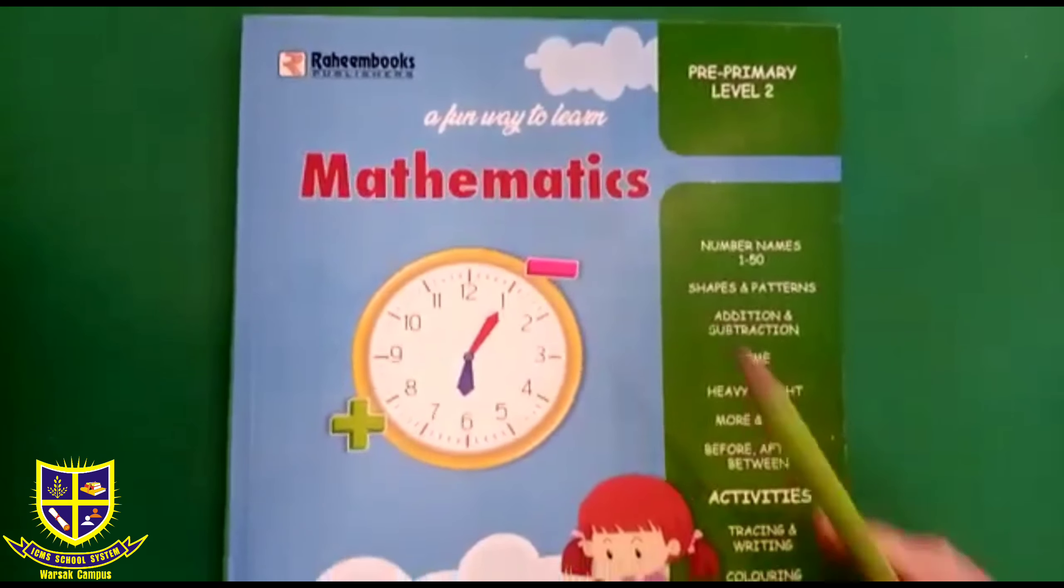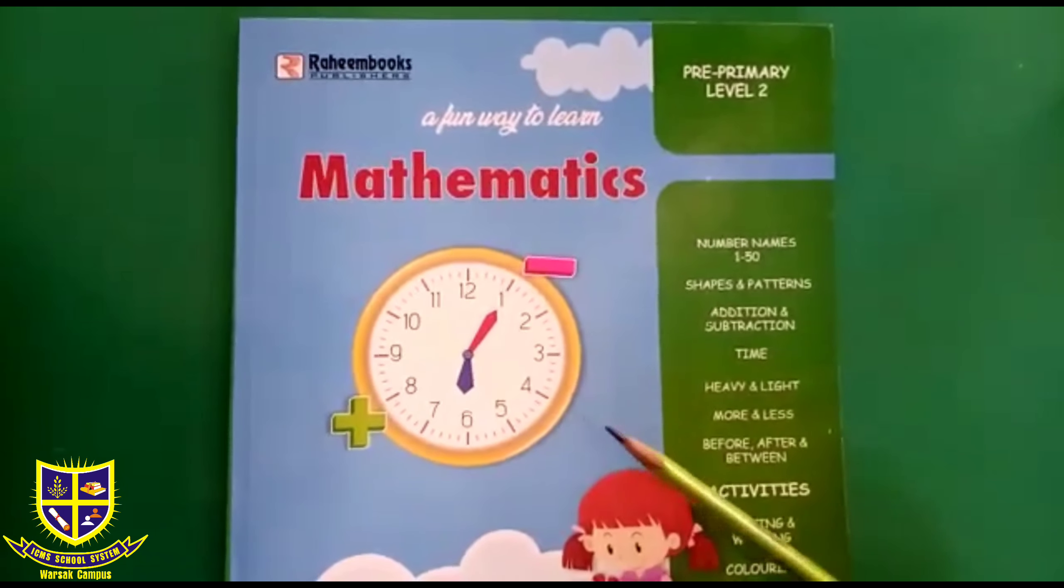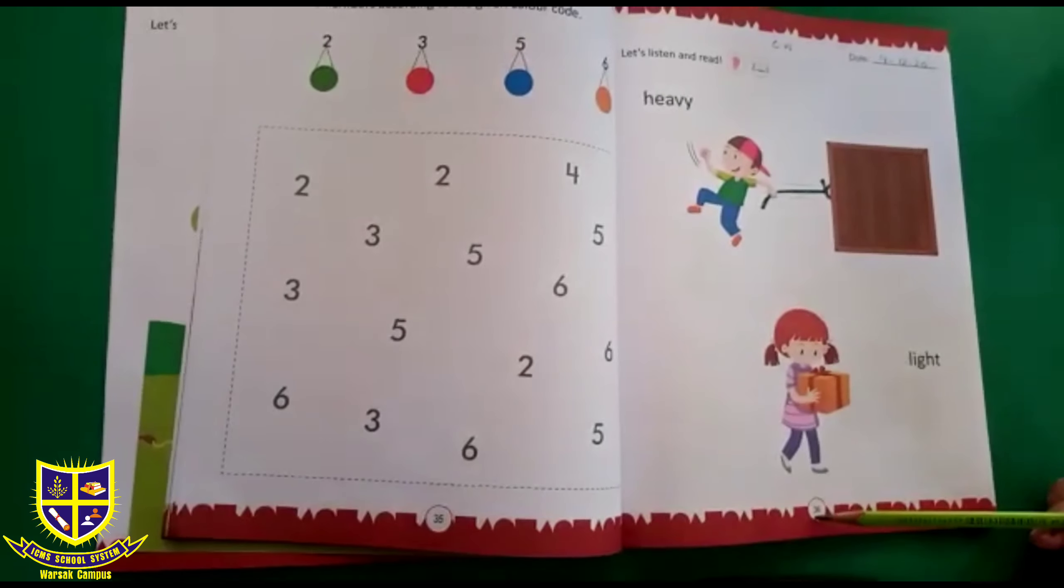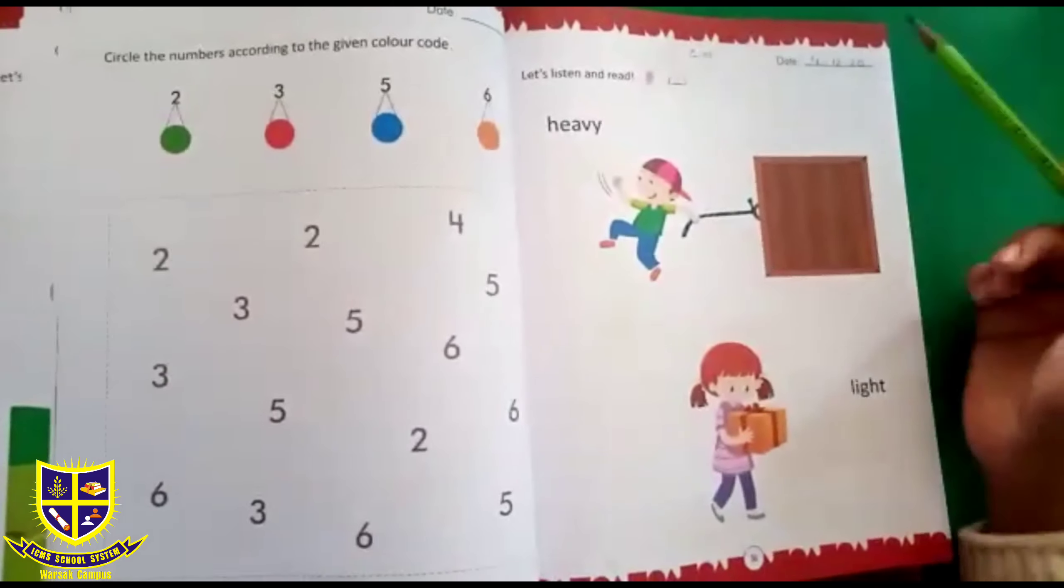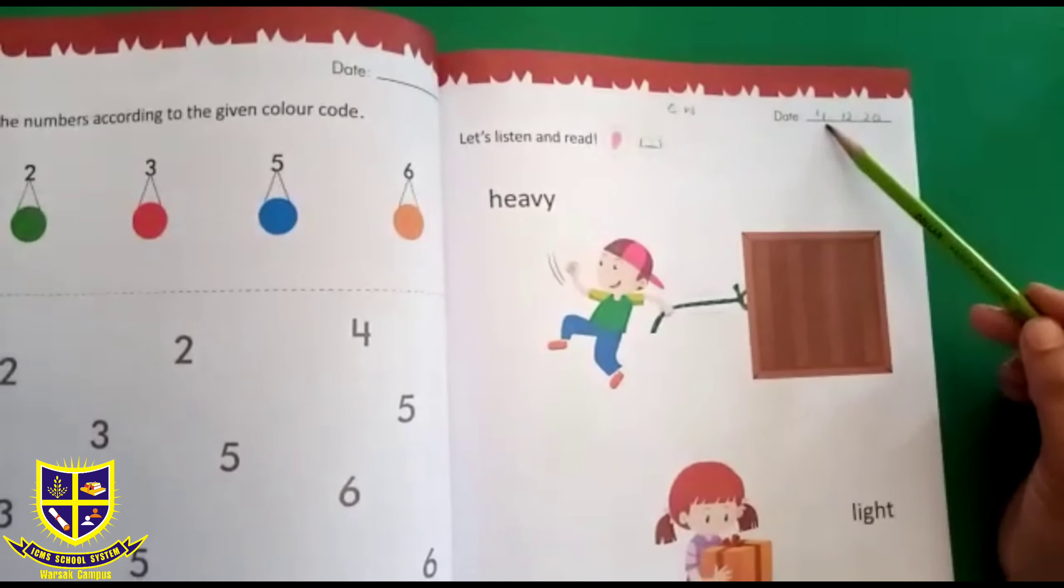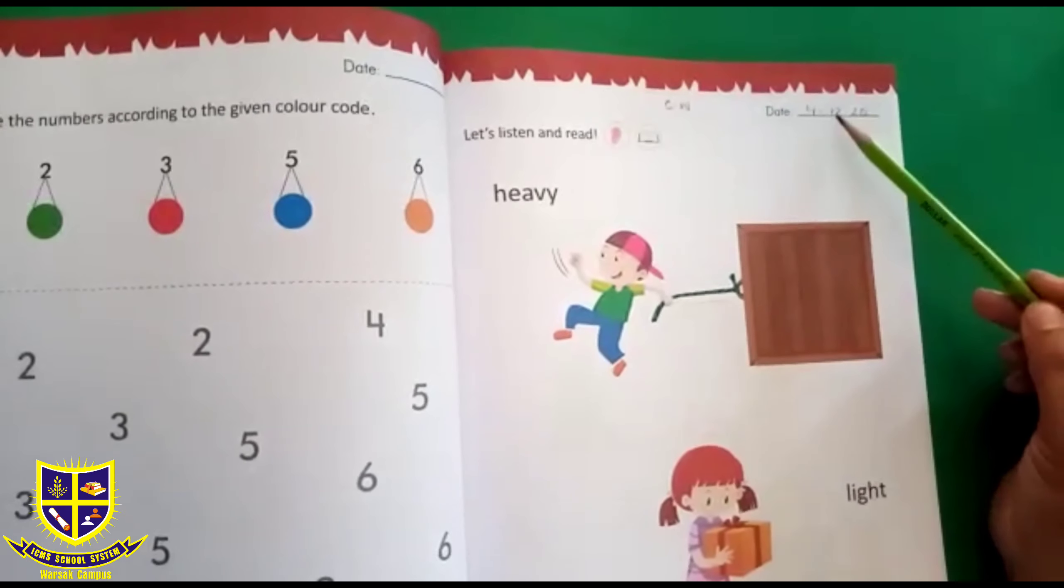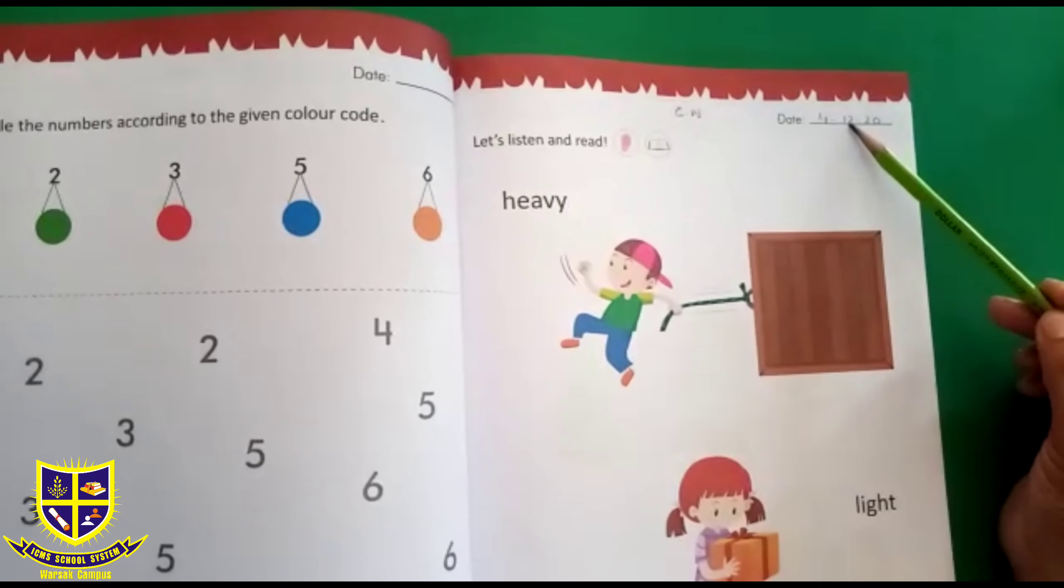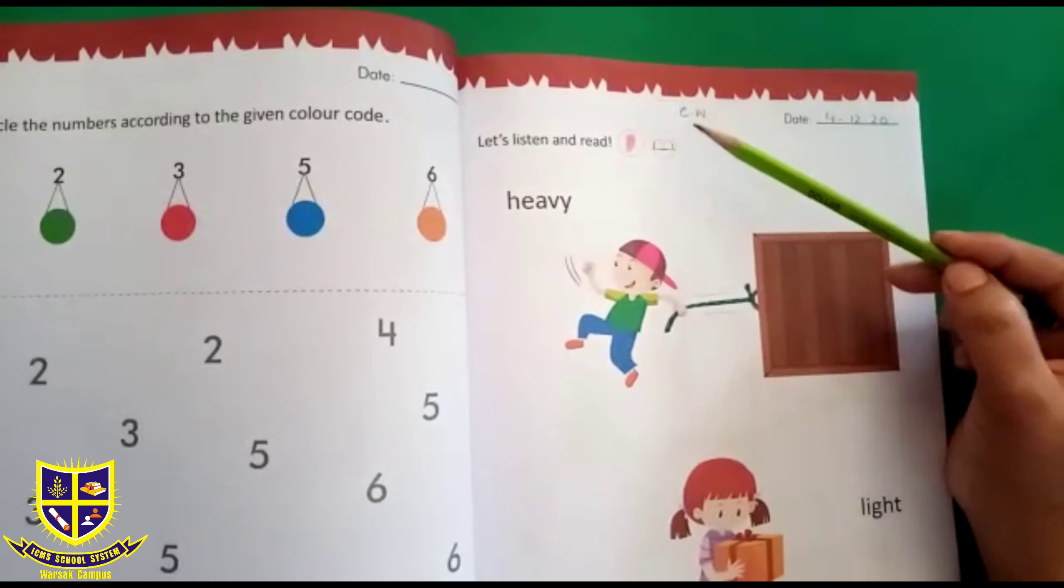Now today's activity is in your maths book. For that, take out your maths book page number 36 and 37. First of all kids, you have to write classwork and today's date at the top. Today is 4th December 2020. 4th is the date, December is the 12th month, and 2020 is the year. You have written C.W.